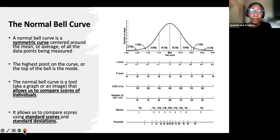The normal bell curve is a tool, also known as a graph or an image, that allows us to compare scores of individuals. These scores that are here on the left, the Z score, T score, CEEB score, standard deviation, IQ score, stanine scores, and percentiles allow us to compare scores to other individuals as well as within ourselves.